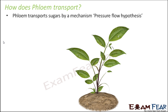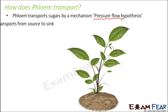Phloem transports sugars by a mechanism called the pressure flow hypothesis. This says that sugar will flow in a direction from high pressure towards a region of low pressure. Before we talk about it in detail, we should understand that transport will always take place from source to sink.